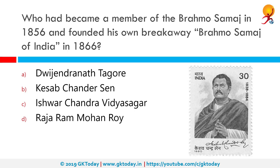Who became a member of the Brahmo Samaj in 1856 and founded his own breakaway Brahmo Samaj of India in 1866? The correct answer is Keshab Chandra Sen. Keshab Chandra Sen was an Indian Bengali philosopher and social reformer. Born a Hindu, he became a member of the Brahmo Samaj in 1856 but founded his own breakaway Brahmo Samaj of India in 1866, while the Brahmo Samaj remained under the leadership of Maharshi Debendranath Tagore.